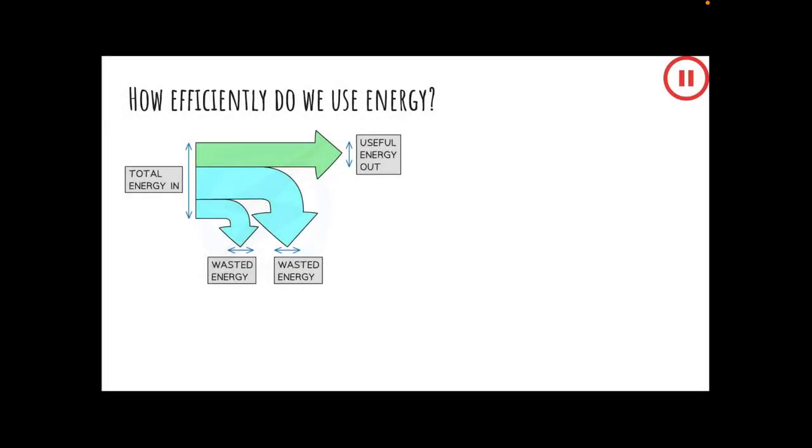Energy is needed to get things done. And to get a job done, energy must be moved or transferred from one place to another. Not all energy is transferred usefully. Sometimes energy is wasted or not useful. If we remember that energy cannot be created or destroyed, there will always be the same amount of energy before and after the transfer. So in this question for box number six, if 100 joules of energy are put into a light bulb and 75 joules of energy are usefully transferred as light energy, how much energy is wasted as heat energy?